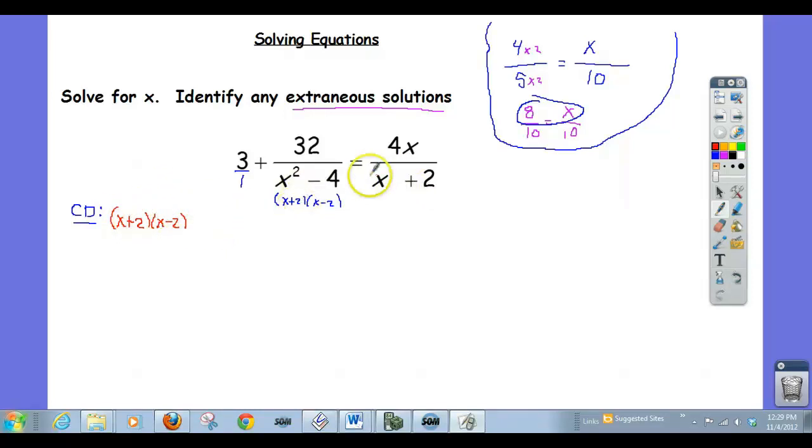So I don't really need to write it again. And now what I do is I just make all my fractions have the common denominator. So this 1 is missing everything. So I need to multiply the top and the bottom of this by x plus 2 and x minus 2.